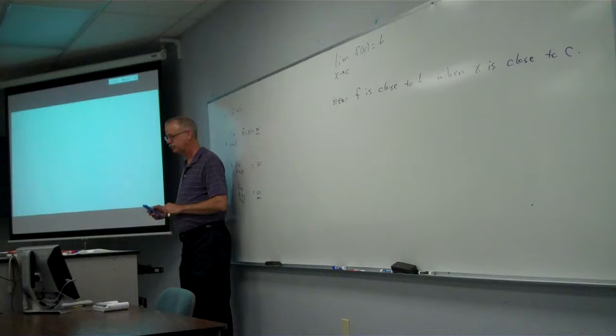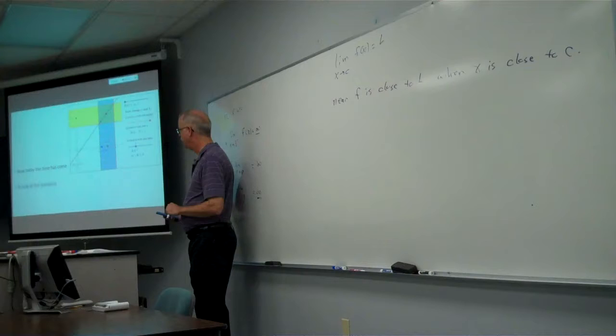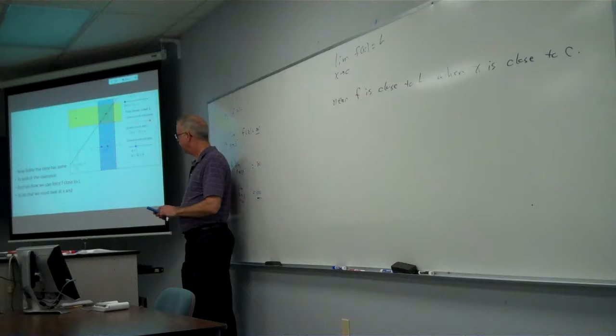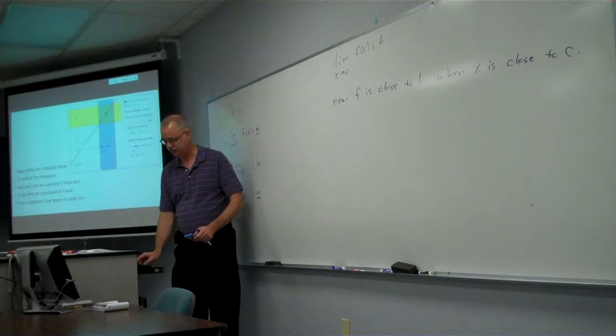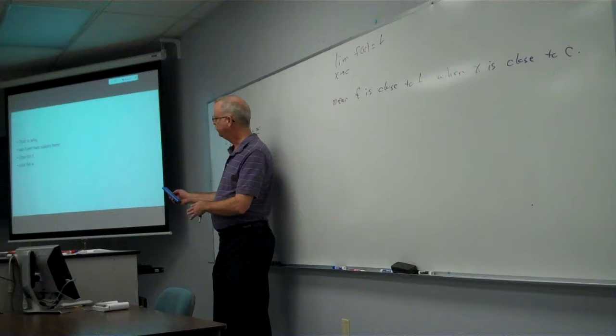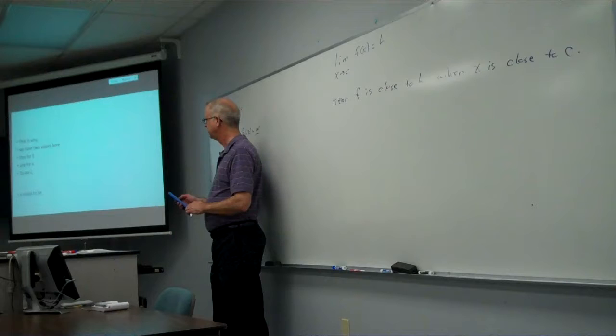Now today the time has come to look at the tolerance. You can see how we can force F close to L. To do that we must look at X and take the tolerance that keeps us close to C. That is why we have two values here. One for F. One for X. To see X needs to be close to C.